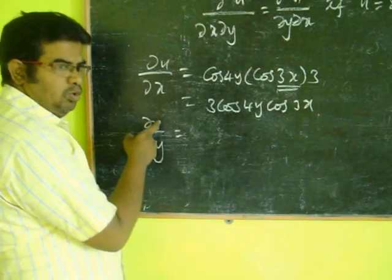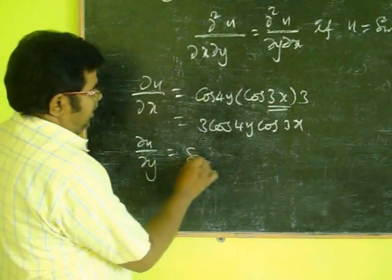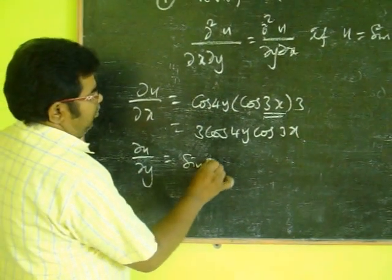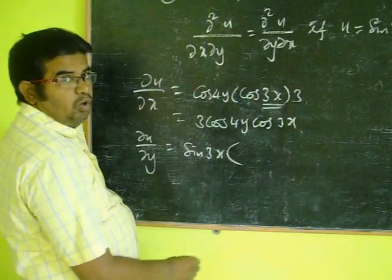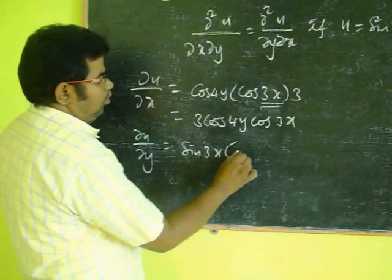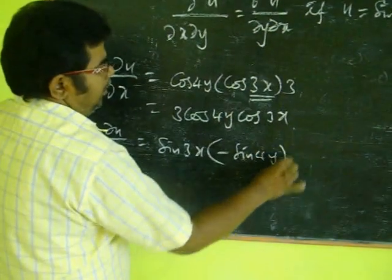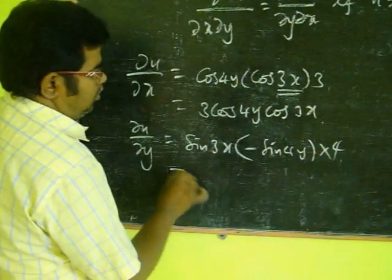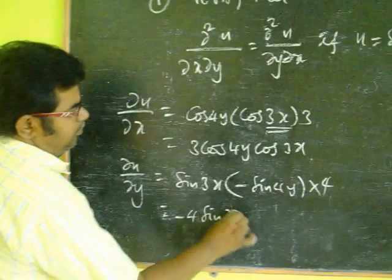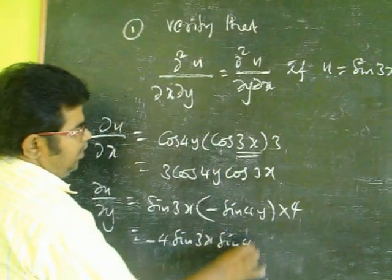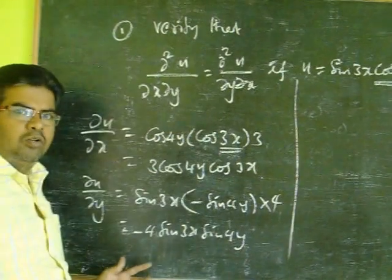Next we find ∂u/∂y — partially u with respect to y. Therefore, we treat x as a constant. Therefore, sin(3x) is a constant. The derivative of cos(4y) is equal to minus sin(4y)·4. So it is equal to minus 4·sin(3x)·sin(4y). That is ∂u/∂y.